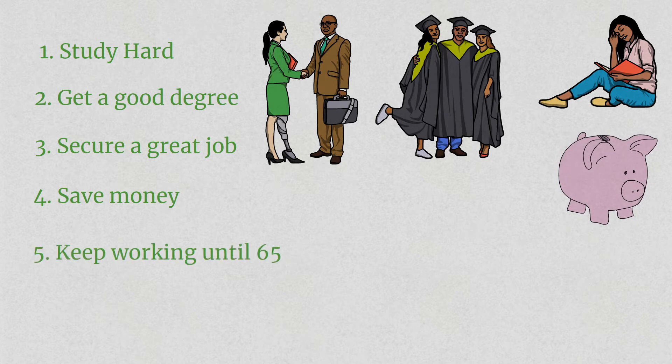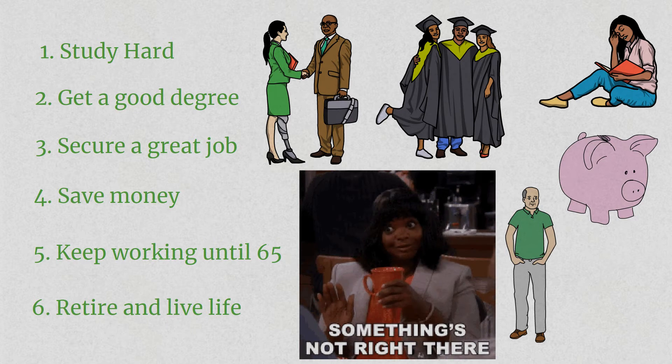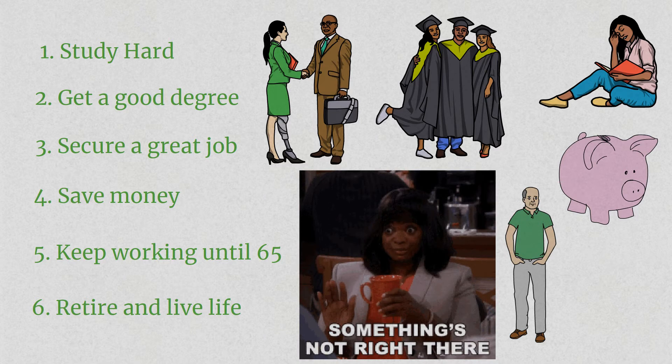Number five, work until the retirement age of 65. Number six, finally enjoy retirement and the remaining years of your life, if you're able to. So I did what I was told and worked my way through the top four points in my life. If you stop and think about this, this template doesn't work for everyone. I realized that I didn't have much savings, and that fundamentally there was something wrong with this blueprint.